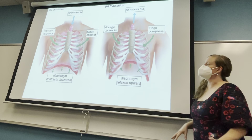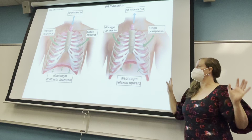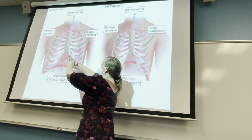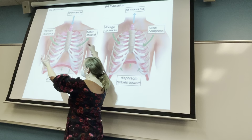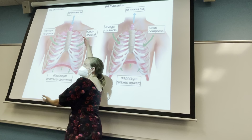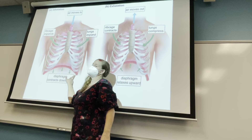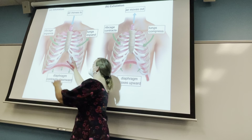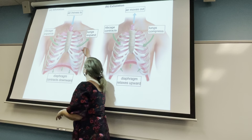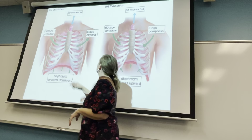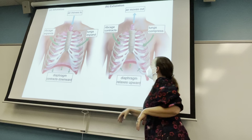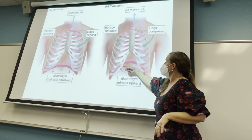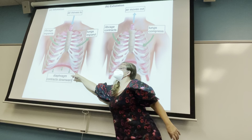Looking at the diagram, when you breathe in everything gets bigger — the diaphragm contracts downward and the ribs move apart. When you exhale, the rib cage gets smaller and the diaphragm moves back up, compressing the lung volume.